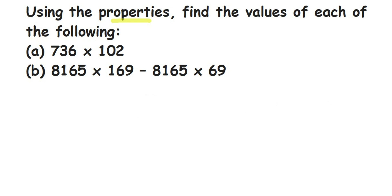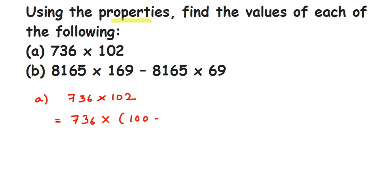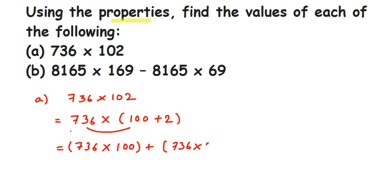Now we're going to use it to solve these two equations. In the first one, we have 736 multiplied by 102. We don't have to directly multiply — we have to split the number to make it easy. So we split 102 as 100 + 2. Now it's like a into (b + c). Open the bracket and multiply 736 with 100, and then with 2.